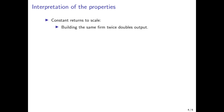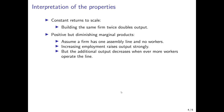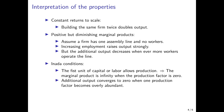To summarize the intuition of these properties: constant returns to scale means building the same firm again doubles output. Positive but diminishing marginal product means output rises strongly initially when you add workers to a fixed assembly line, but additional output decreases as more workers operate the same line. The Inada conditions mean the first unit of physical capital or labor allows production and increases output by an infinite amount, but additional output converges to zero when one production factor becomes overly abundant.